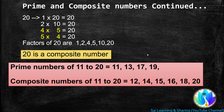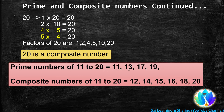So, the prime numbers and composite numbers from 11 to 20: the prime numbers are 11, 13, 17, and 19. The composite numbers are 12, 14, 15, 16, 18, and 20. I hope you understand the concept of prime and composite numbers from 11 to 20.